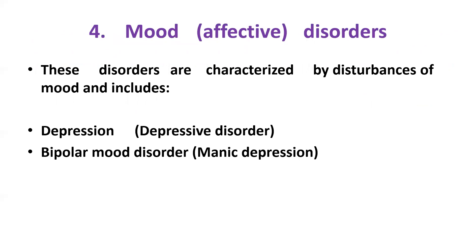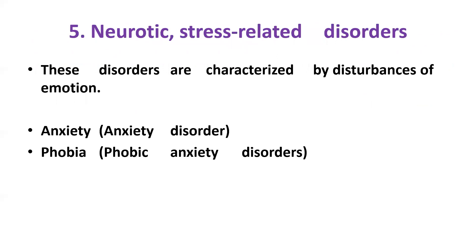The fourth one is mood disorders. These are characterized by disturbances of mood and include depression, also called depressive disorders, or bipolar mood disorders, also called manic depression. The fifth one is neurotic stress-related disorders, characterized by disturbances of emotions, for example anxiety disorders and phobia, also called phobic anxiety disorders.